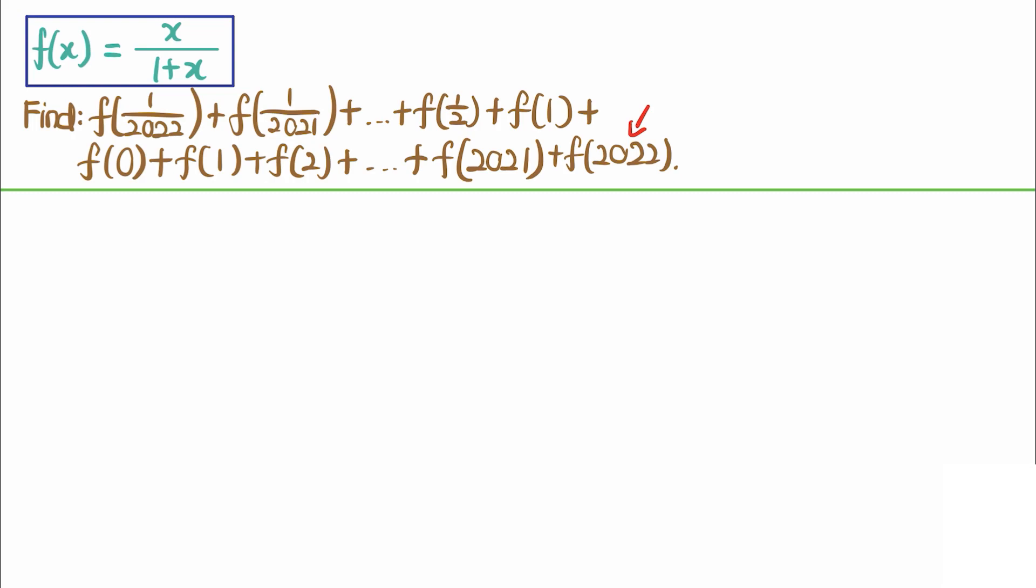To solve this problem, you can realize that the first part of the sum, which is f of 1 over 2022 up to f of 1 over 2 and f of 1, is actually the reciprocal of the second part, which is f of 1 until f of 2022. So you may think we want to find what is f of 1 over x.